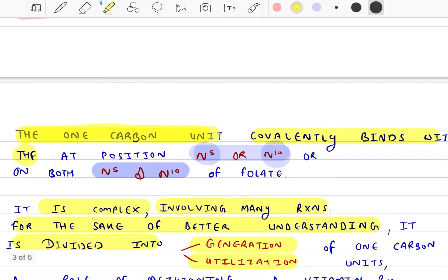The one carbon unit covalently binds with THF at position N5 or N10, or both N5 and N10 of folate.